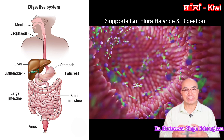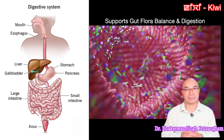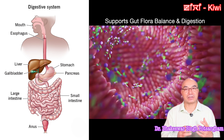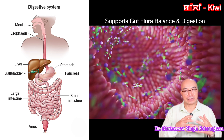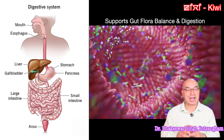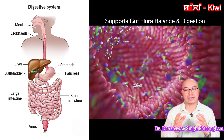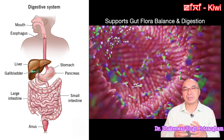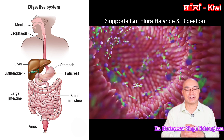There is the digestive system, which has many different parts and is supported by the body. The intestinal flora involves a balance of bacteria, and this intestinal flora is supported by the body's immune function.